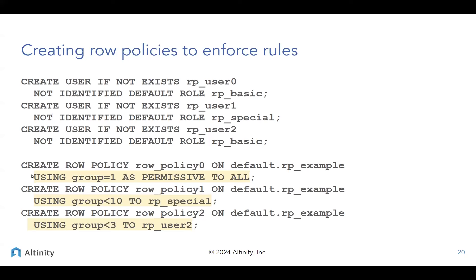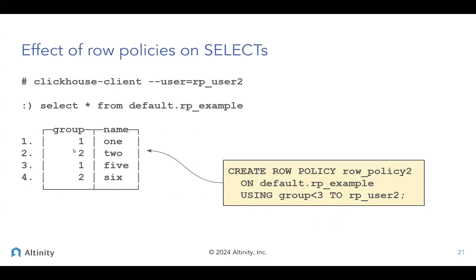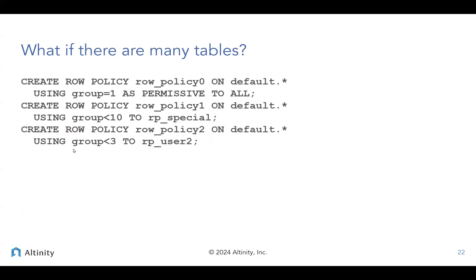You can see how you can begin to combine row policies — of course you can make yourself completely confused. One important thing about row policies is these policies are very specific to single tables and single users. One of the things you can do is use wildcards to assign these policies to groups of tables or within a database, which will allow you to create a more template-oriented system.